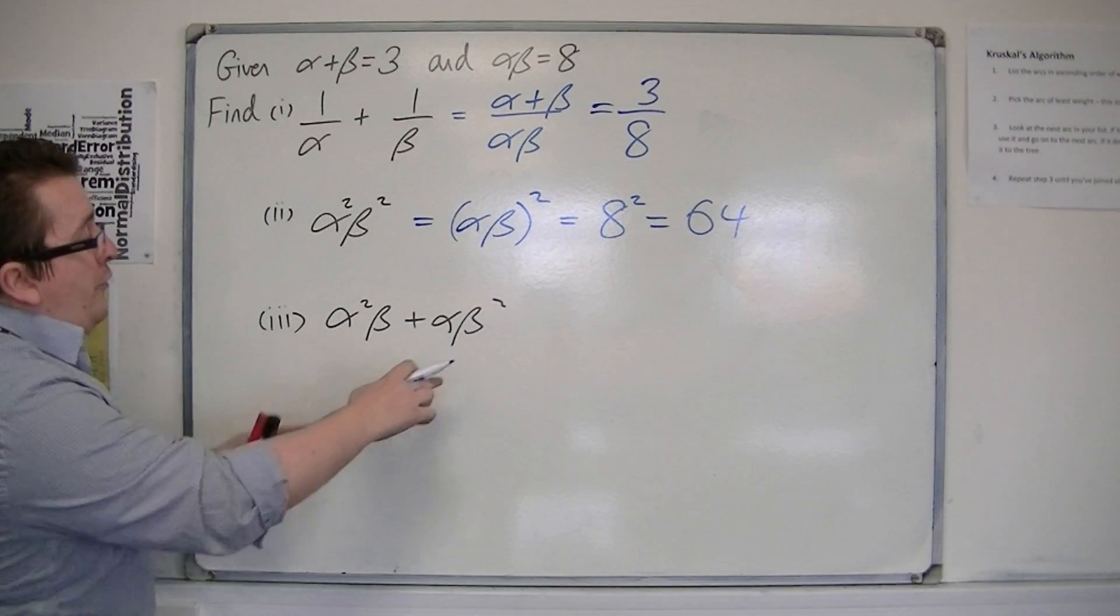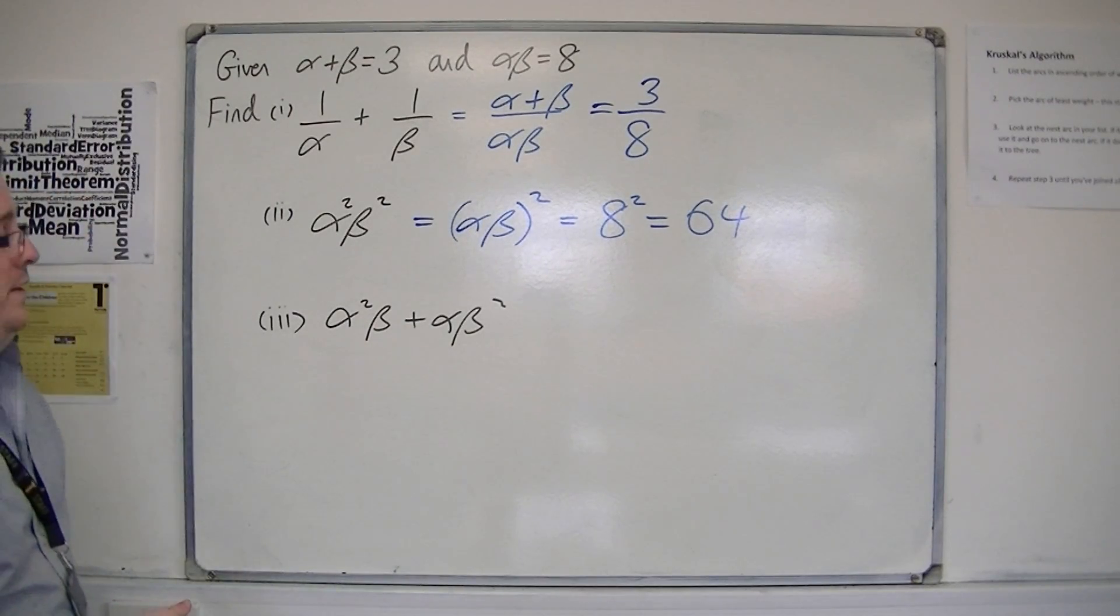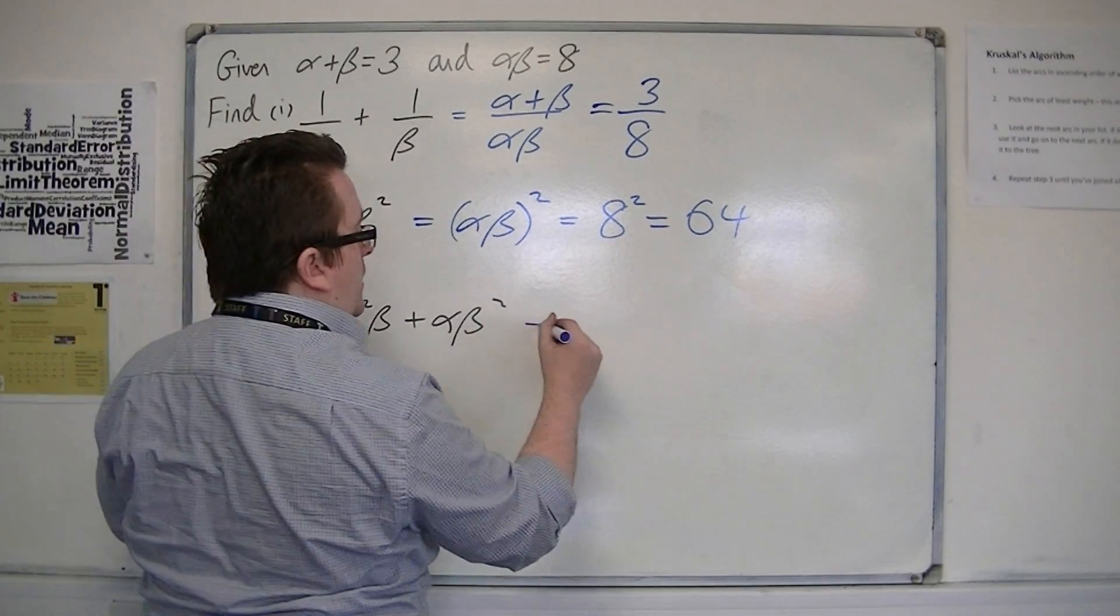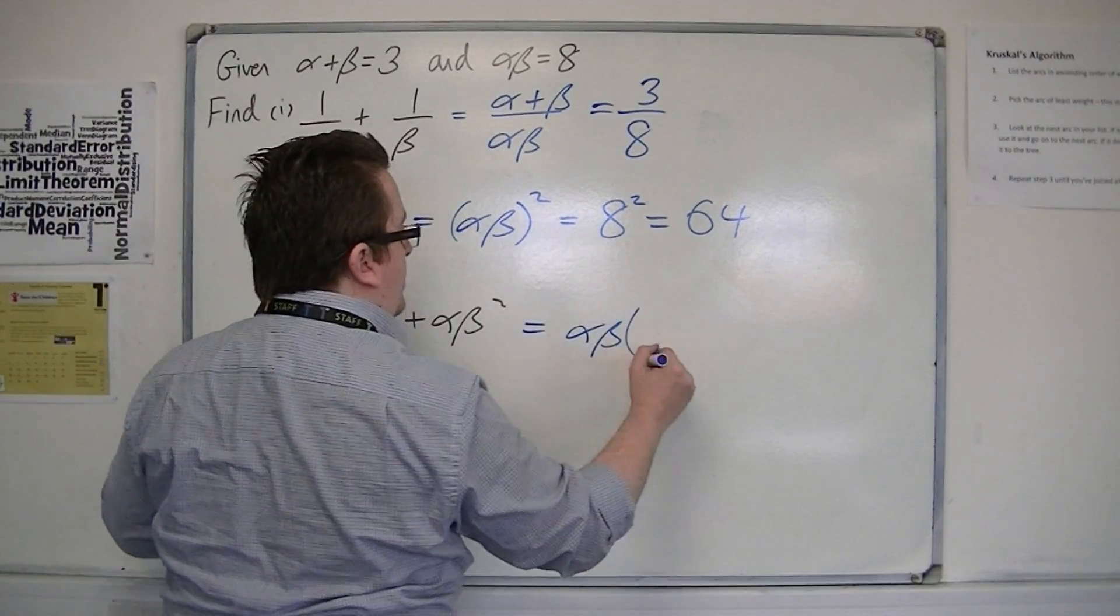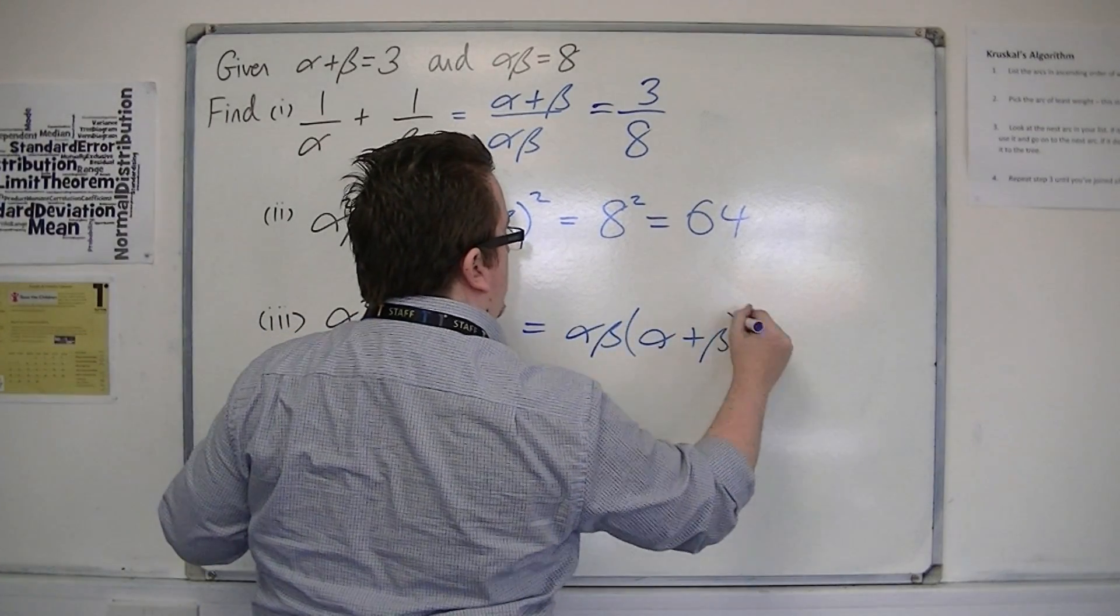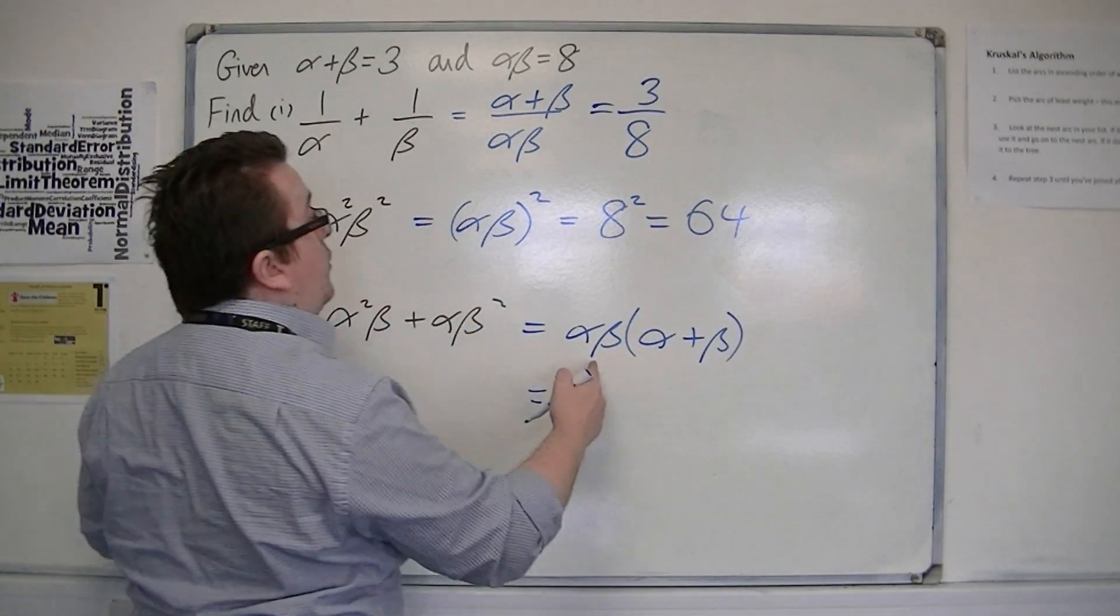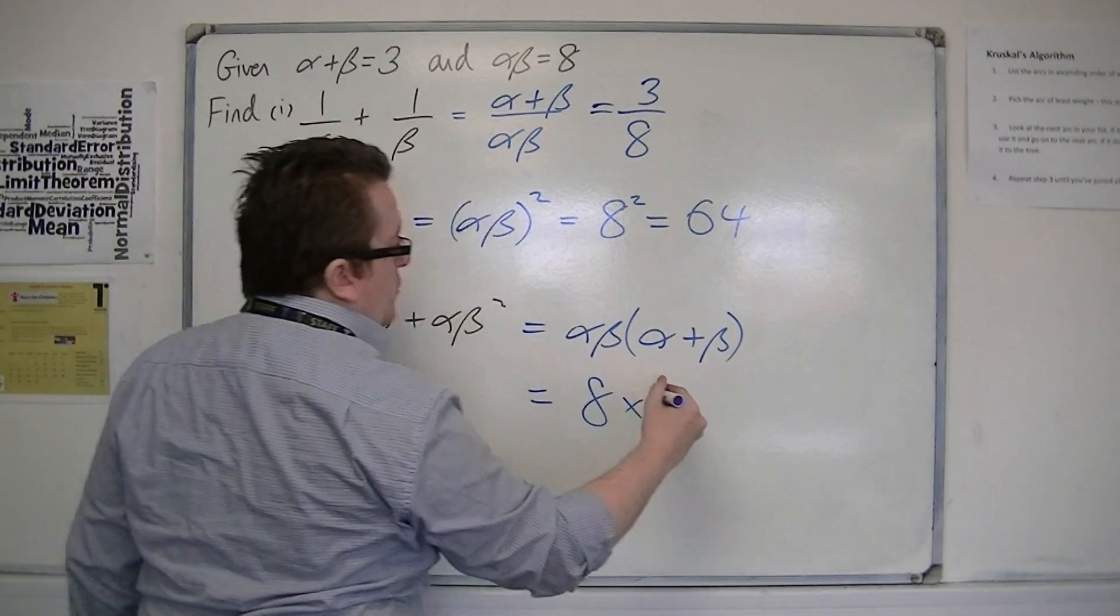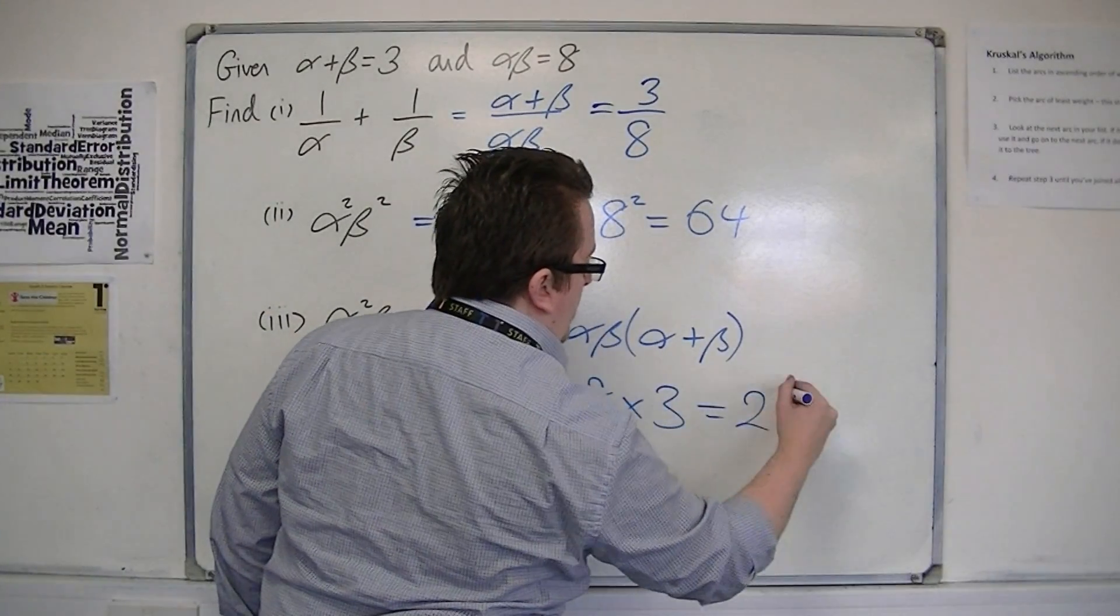And then finally, alpha squared beta plus alpha beta squared. Well they both have alpha beta in them, so you can take that out as a factor. And inside you would have alpha plus beta. So actually we've got alpha beta, which is 8, multiplied by alpha plus beta, which is 3. So that's 24.